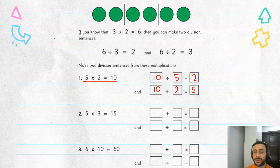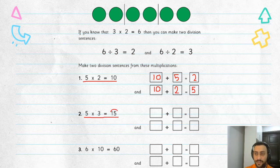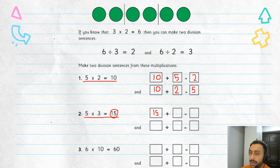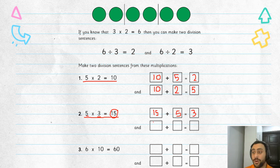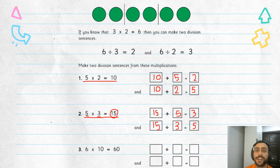Let's look at this one. Five times three equals fifteen. So fifteen divided by five equals three. And also fifteen divided by three equals five. Pretty easy.